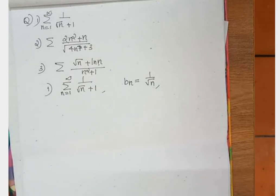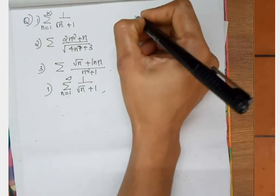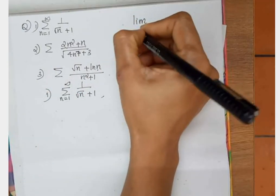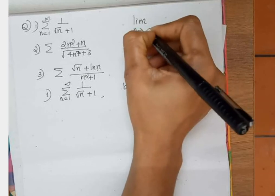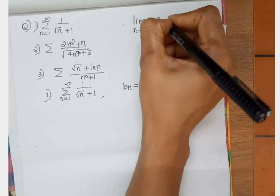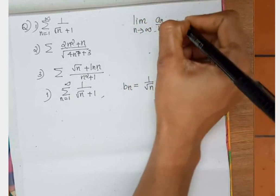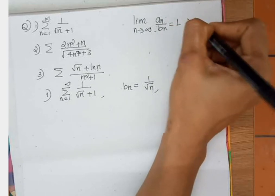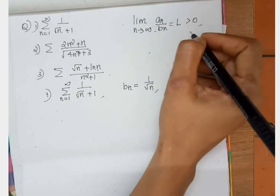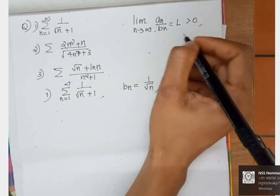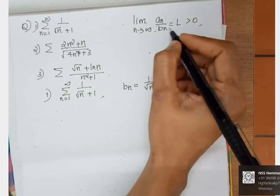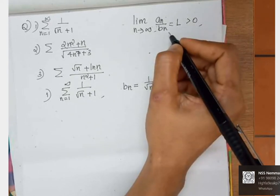In this class we are going to study some solving techniques of series by using the limit comparison test. If sigma aₙ and sigma bₙ are two positive term series and the limit of aₙ/bₙ equals L, which is greater than 0 and finite, then sigma aₙ and sigma bₙ converge or diverge together.